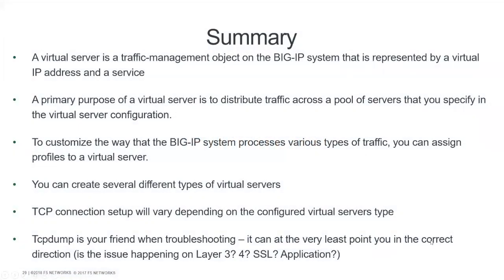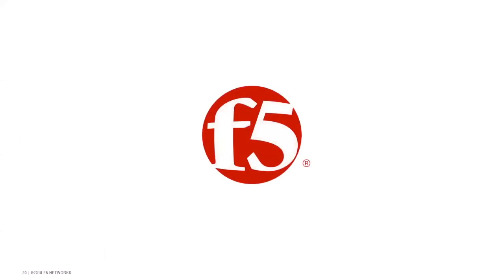Summary — to wrap up everything: remember that a virtual server is a listener, a traffic management object on the BIG-IP represented by a virtual IP and a service. Its primary purpose is to distribute traffic across a pool of servers. You can assign profiles that will change the behavior of the system, and there are different types of virtual servers depending on your requirement. The TCP connection setup will vary depending on the configured virtual server type. And really importantly, tcpdump is your friend when troubleshooting — even if you take a packet trace and don't fully understand what you're seeing, it can point you in the correct direction: is this a layer two, layer three, or layer four issue? This was part of our basic troubleshooting sessions. Thank you very much.